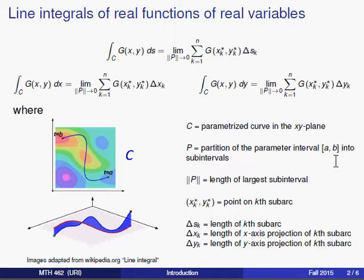C is a parameterized curve in the XY plane, and we take the parameter values, which run from A to B, and mark off sub-intervals. We partition this interval A, B into little sub-intervals. As we partition the values from A to B, this corresponds to splitting up our curve C into little tiny sub-arcs. We take a point in each sub-arc, evaluate the function at that spot, and multiply by the length of that sub-arc, or maybe the length of the sub-arc projected onto the X or Y axis.